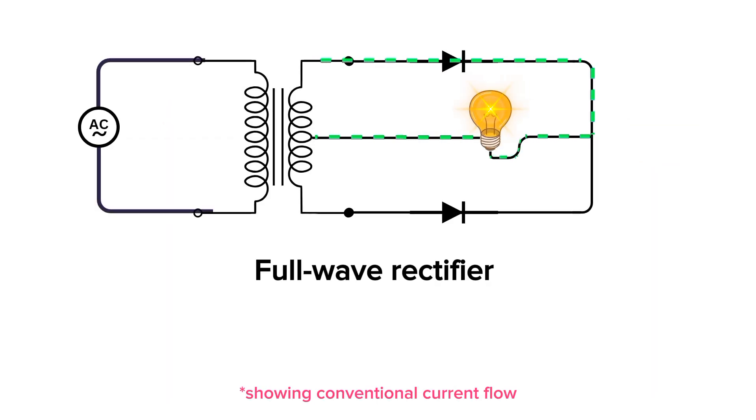During the positive half cycle of AC, the current flows from the top end of the secondary winding through the diode and the lamp and returns to the center tap of the transformer while the other diode is reverse biased and blocking the current.